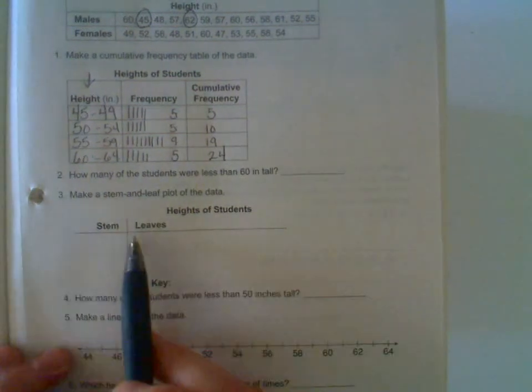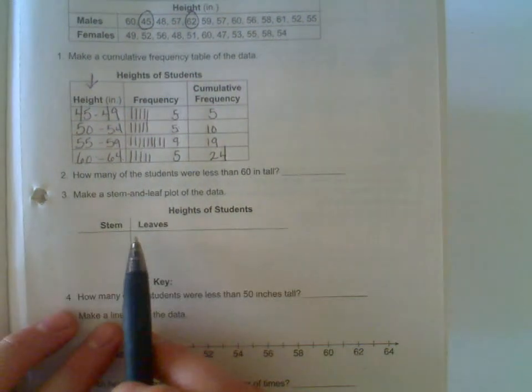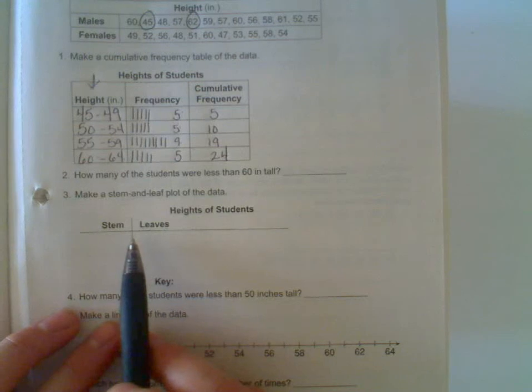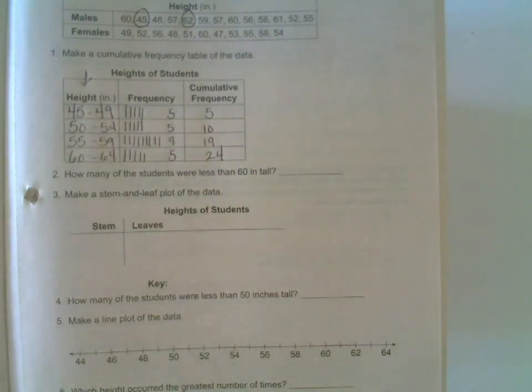Here's question number three where we're making a stem-and-leaf plot of the data. Now, a stem-and-leaf plot groups numbers together, kind of in the same way this does, but it's going to go based on tens digits in this particular problem.